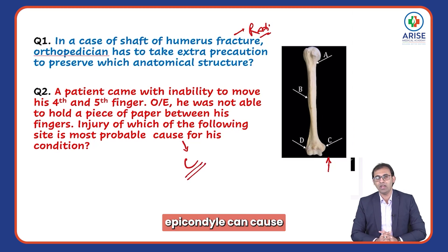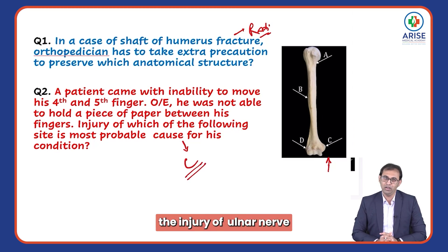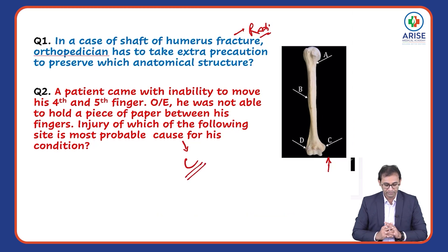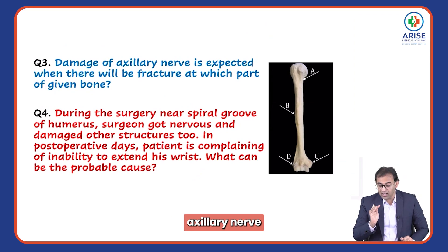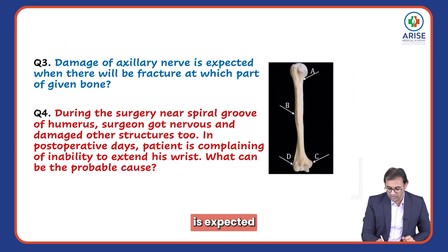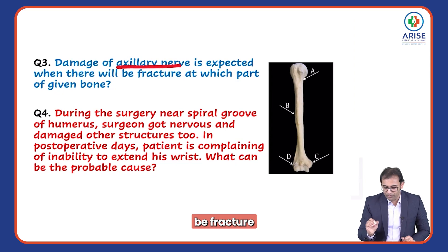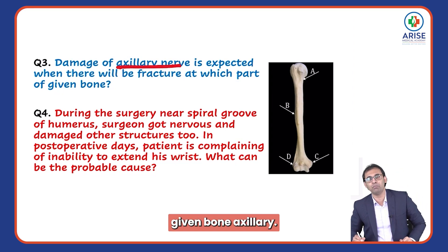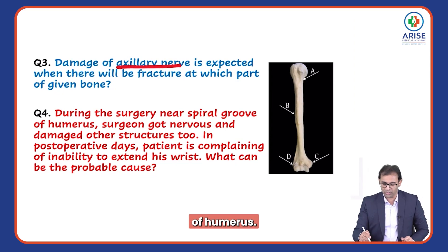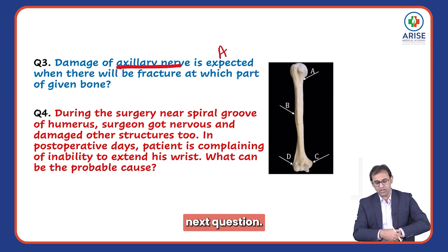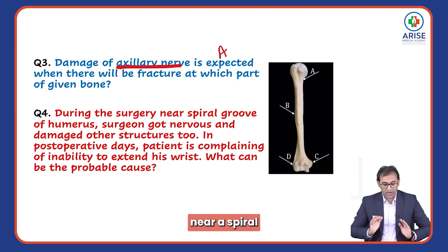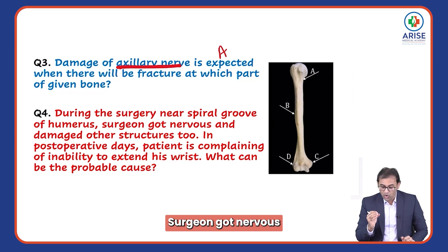Injury to the medial epicondyle can cause injury to the ulnar nerve. One more question: damage to the axillary nerve is expected when there is a fracture at which part of the given bone? The axillary nerve passes at the surgical neck of the humerus, so the answer will be A.